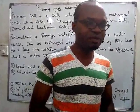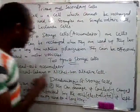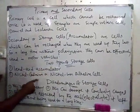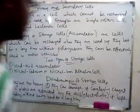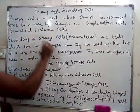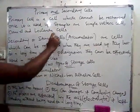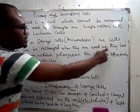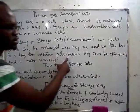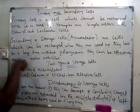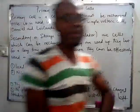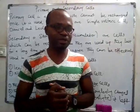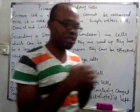Good examples of secondary cells — there are two: the lead-acid accumulator and the nickel-cadmium, nickel-iron, or alkaline cell. Secondary cells can be recharged when used up, they last for a long time without polarization, and they can be effectively used in motor vehicles. That's the kind of batteries used in motor vehicles — they call them accumulators.